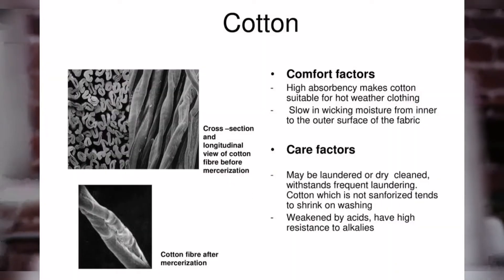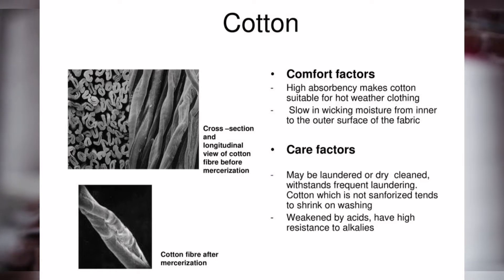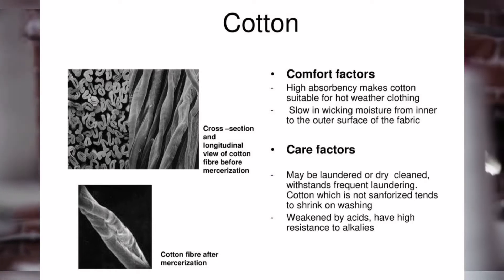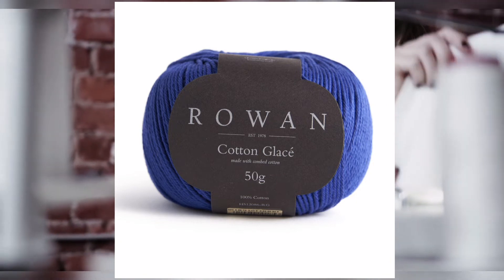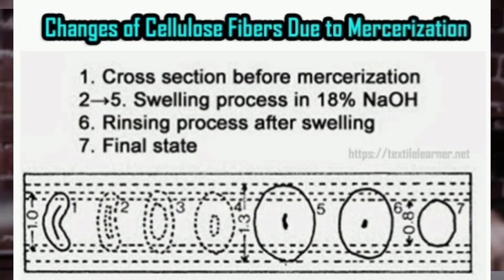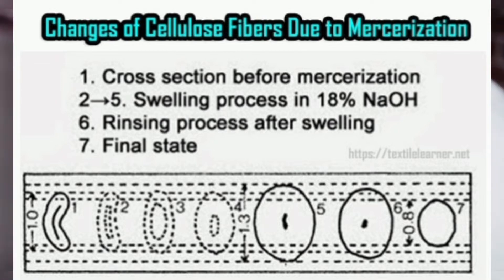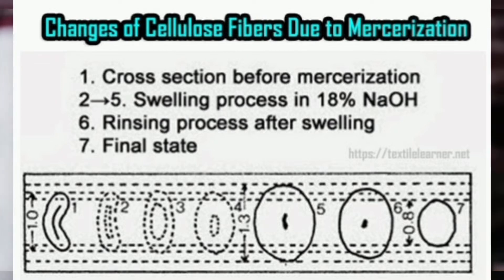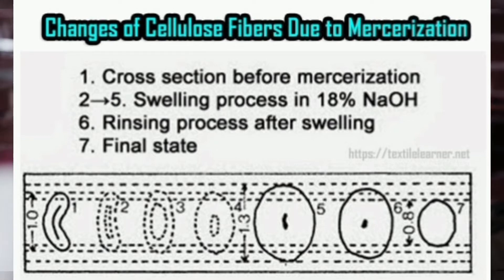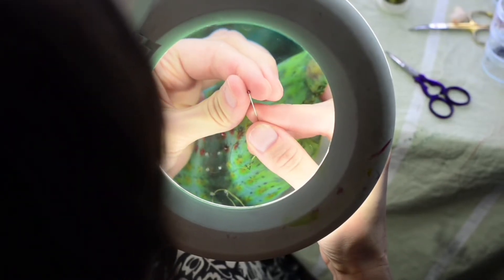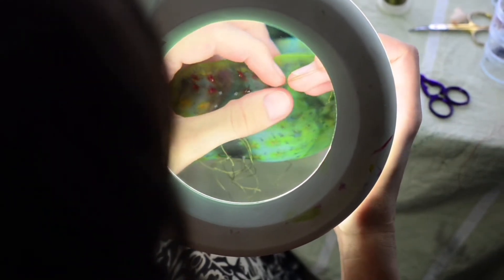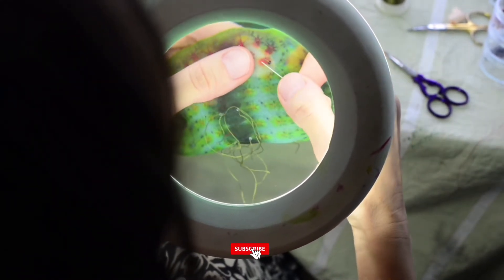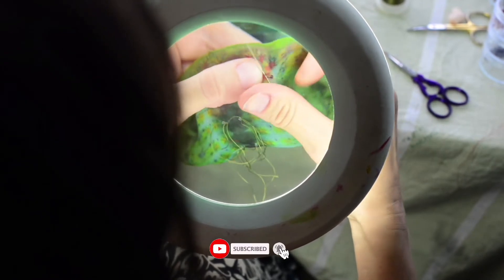Glass cotton threads are produced from dyed soft threads which have then been consolidated and protected by the application of a special surface coating. Mercerized cotton threads are treated under tension in a solution of caustic soda, which causes the fiber to swell and become rounder in cross-section. Mercerizing enhances the luster and marginally increases the strength of the fibers, and dye affinity is also enhanced.